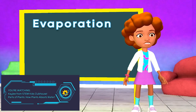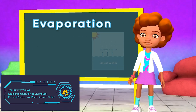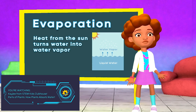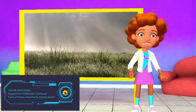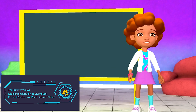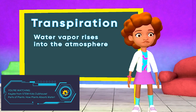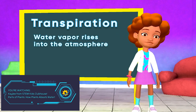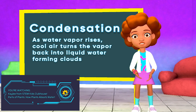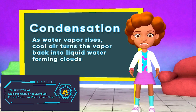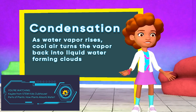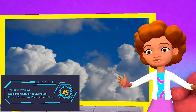Stage one is called evaporation. This is when heat from the sun turns the water in the oceans, lakes, and rivers into water vapor. Water vapor is the gas form of water. Stage two is called transpiration. This is when water vapor rises up and enters into the atmosphere. Stage three is called condensation. As water vapor goes higher and higher above us, the cold air of the atmosphere turns it back into liquid water. This is where clouds come from.